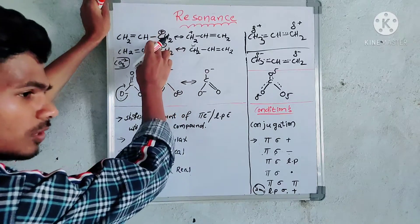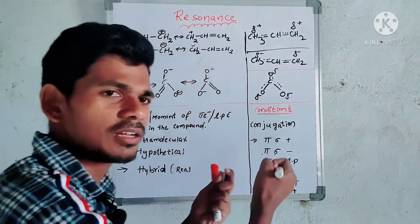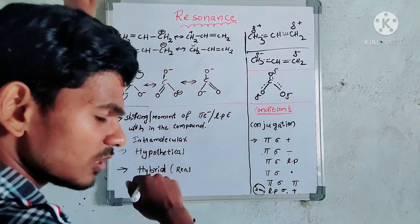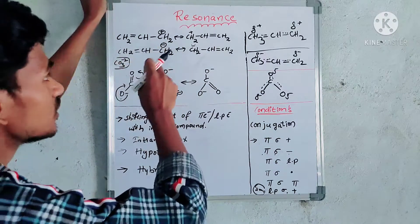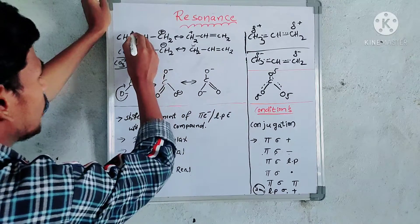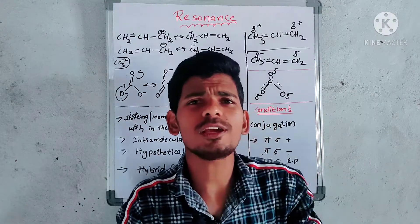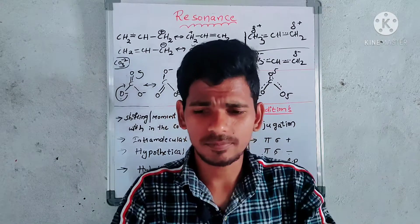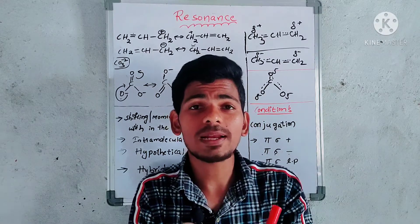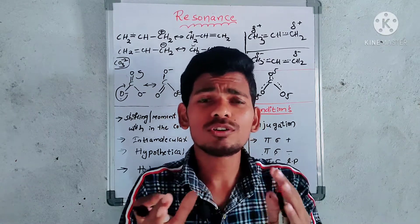For example, say we have chlorine attached. This carbon gets a positive charge — CH2 positive. See here, there is a pi bond. This pi bond is always a weak bond.